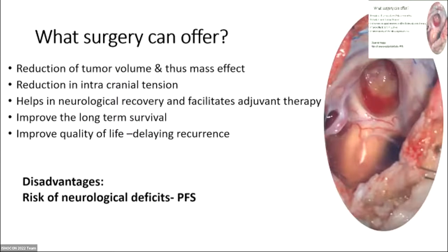Surgery has a significant role. Most of these children come to the emergency room with obstructive hydrocephalus, vomiting, and altered sensorium. We need to be very aggressive in our approach to improve functional neurological outcome. Good dissection and good reduction in tumor volume improves outcome and facilitates earlier adjuvant therapy. Studies have shown good long-term survival in these children.